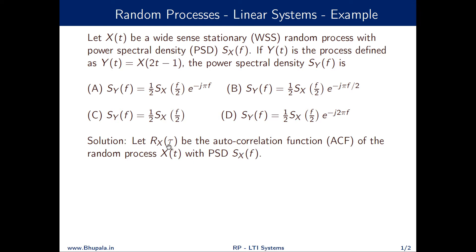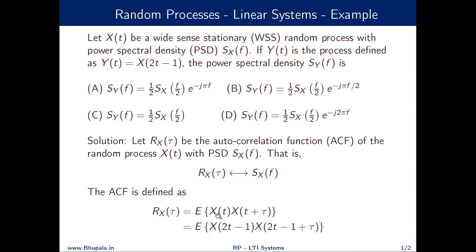Let Rx(τ) be the autocorrelation function of the random process X(t). The autocorrelation function and power spectral density are related as a Fourier transform pair, so Rx(τ) ↔ SX(f). The autocorrelation function is defined as Rx(τ) = E[X(t)·X(t + τ)]. An important property of a WSS process is that its autocorrelation depends only on the difference of sampling intervals τ.